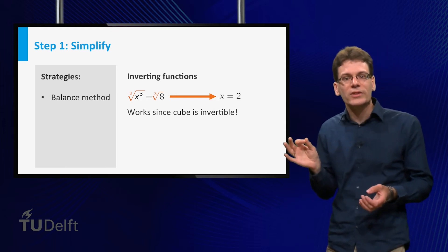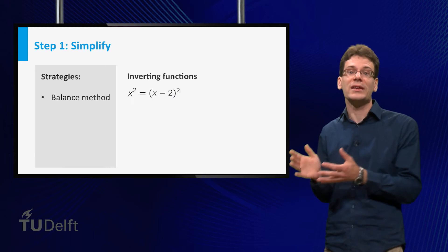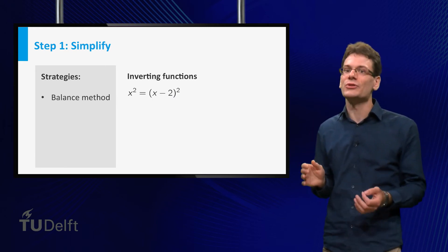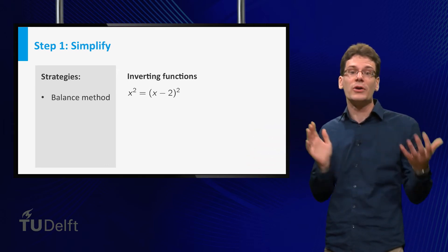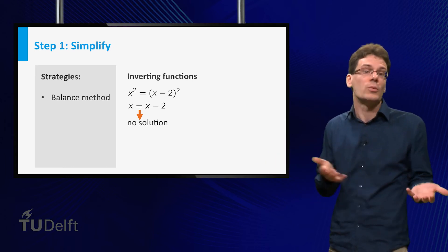Be careful when it comes to squares. For example, consider the equation x squared equal to x minus 2 squared. I've seen many students make the following mistake. To get rid of the square, we take the square root on both sides and end up with x equal to x minus 2, which has no solution.